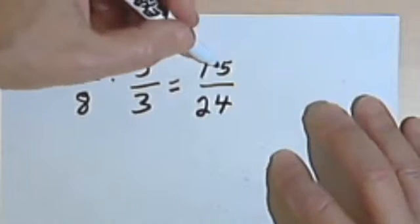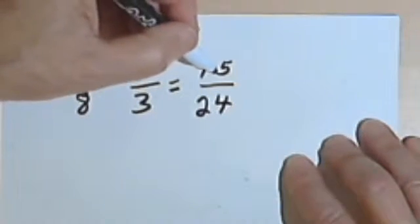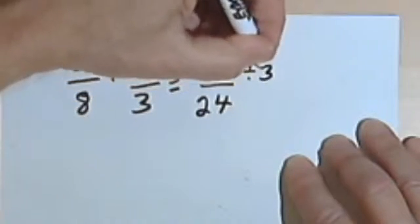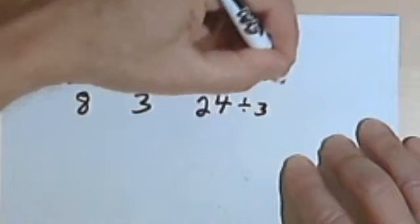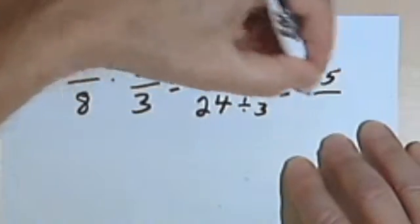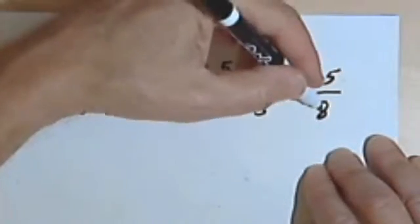And then before I decide that I'm done, I want to see if I can reduce it. And I realize that both 15 and 24 can be divided by 3. So I'll divide them both by 3. And then I get 15 divided by 3 is 5, and 24 divided by 3 is 8. So my answer is 5 eighths.